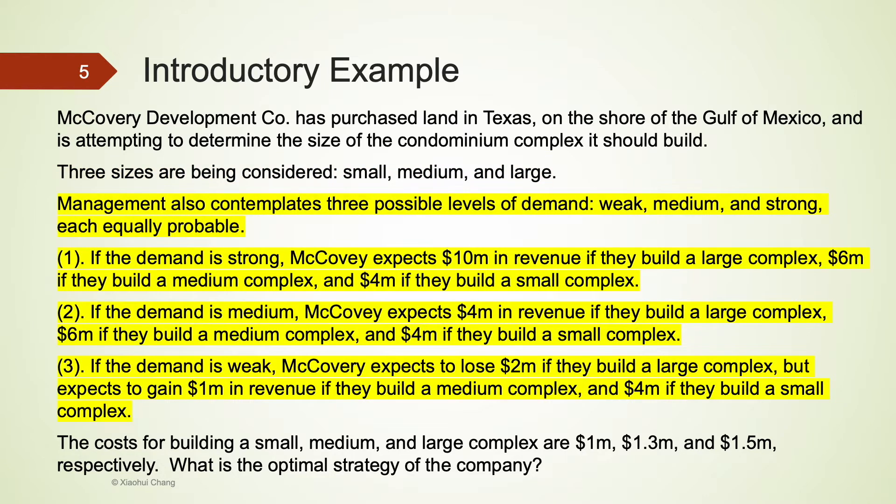The consequences, also the payoffs, associated with the alternatives are uncertain, as they depend on the future demand. A large complex appears to be more profitable than a small complex when the demand is strong. On the other hand, a small complex is a better choice than a large complex when the demand is weak.